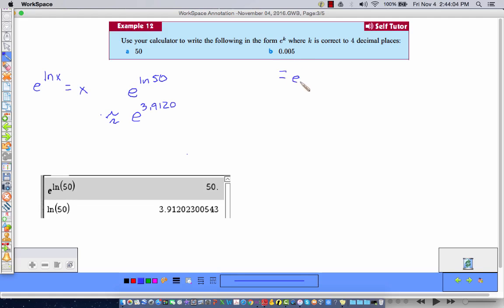And then 0.005. Well, that is equal to E to the natural log of 0.005. And doing the same thing, I'm not going to do that over. I'm just going to tell you that if you take the natural log of 0.005, you get negative 5.2983. Okay. A couple of more examples.